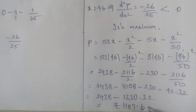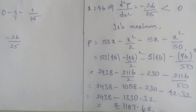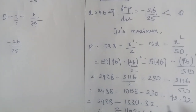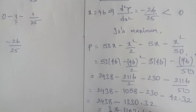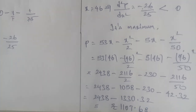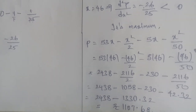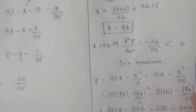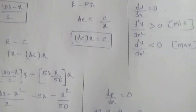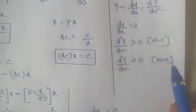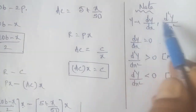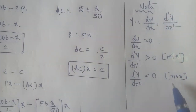So the answer to this sum: maximum profit occurs at output x equals 46. Using the maximum-minimum rule, we applied differentiation twice to find and confirm the maximum profit.